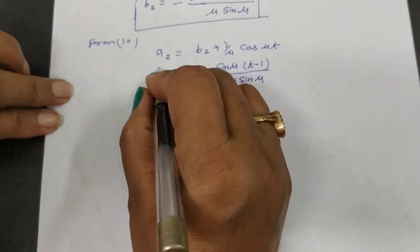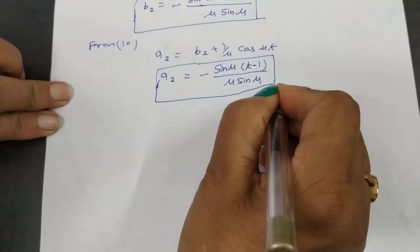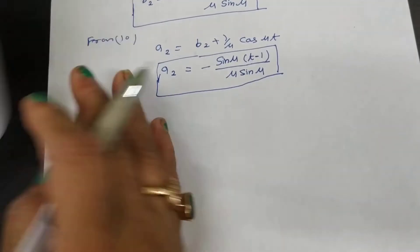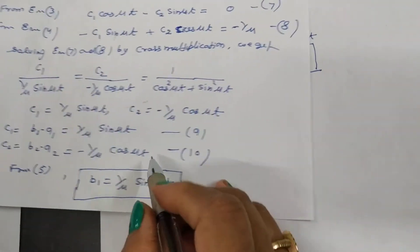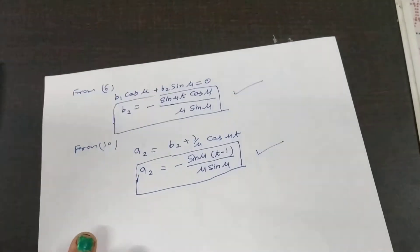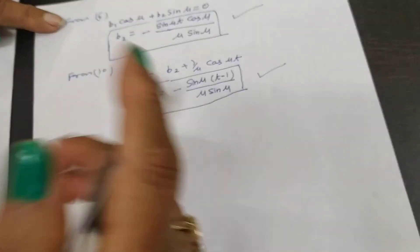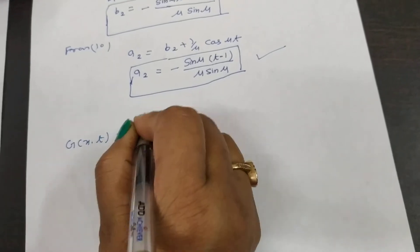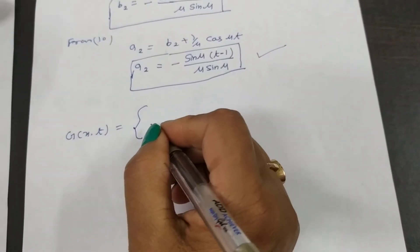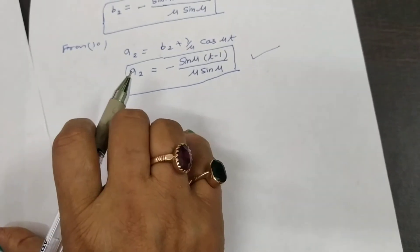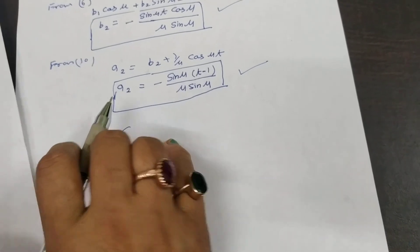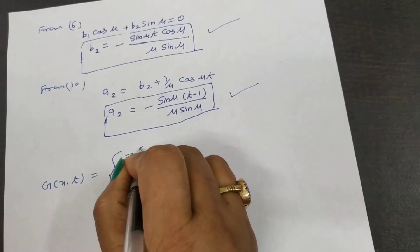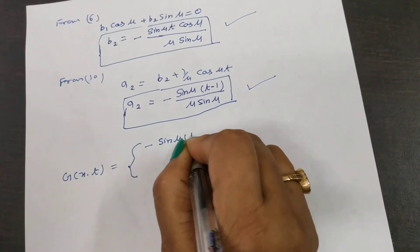a1 and a2 are found here. Substituting all the values of a1, a2, b1, b2 we get the Green's function G(x,t). G(x,t) is defined as a1·a2 plus b1·b2. Substituting the values of a1 and a2 in the Green's function we get minus of sin(μt minus 1).